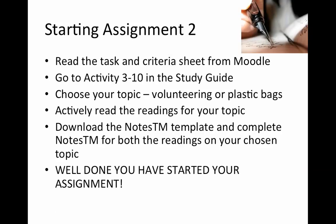Once you've worked through those things — approximately the first half of module three — you're in a position to start assignment two. Read the task and criteria sheet downloaded from Moodle and go to activity 310 in the study guide. You'll see that you get to choose one of two topics for your research paragraph: either volunteering or plastic bags. The topic is really just there for you to demonstrate the skills from this module — reading, note-taking, referencing, and writing a research paragraph.